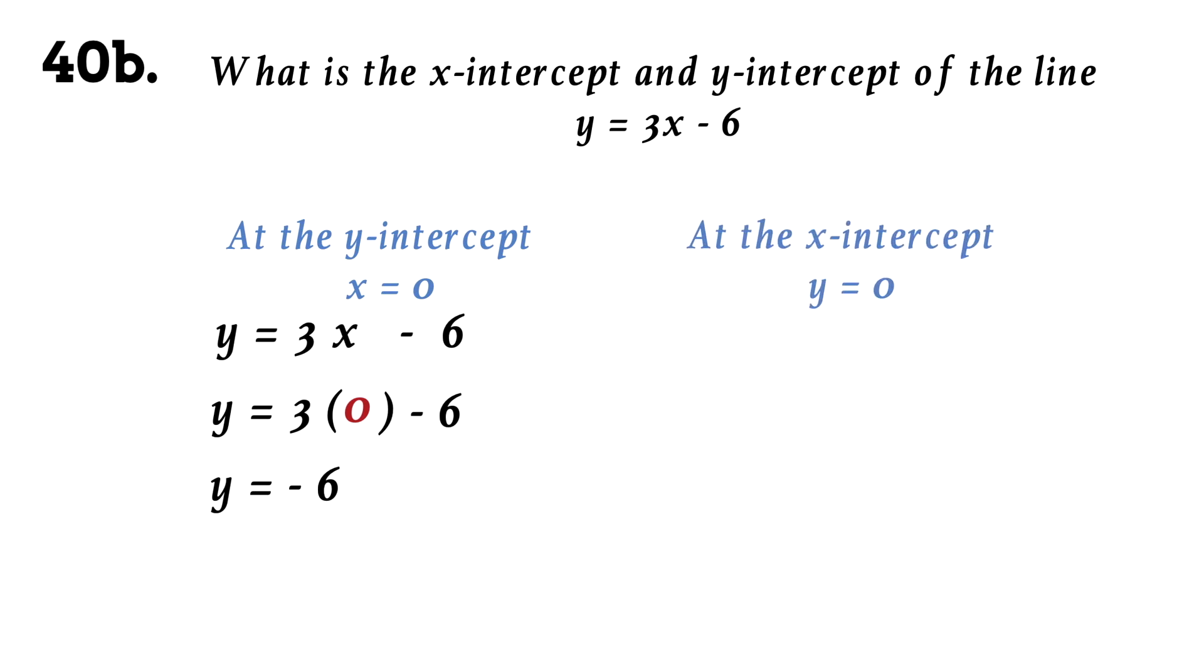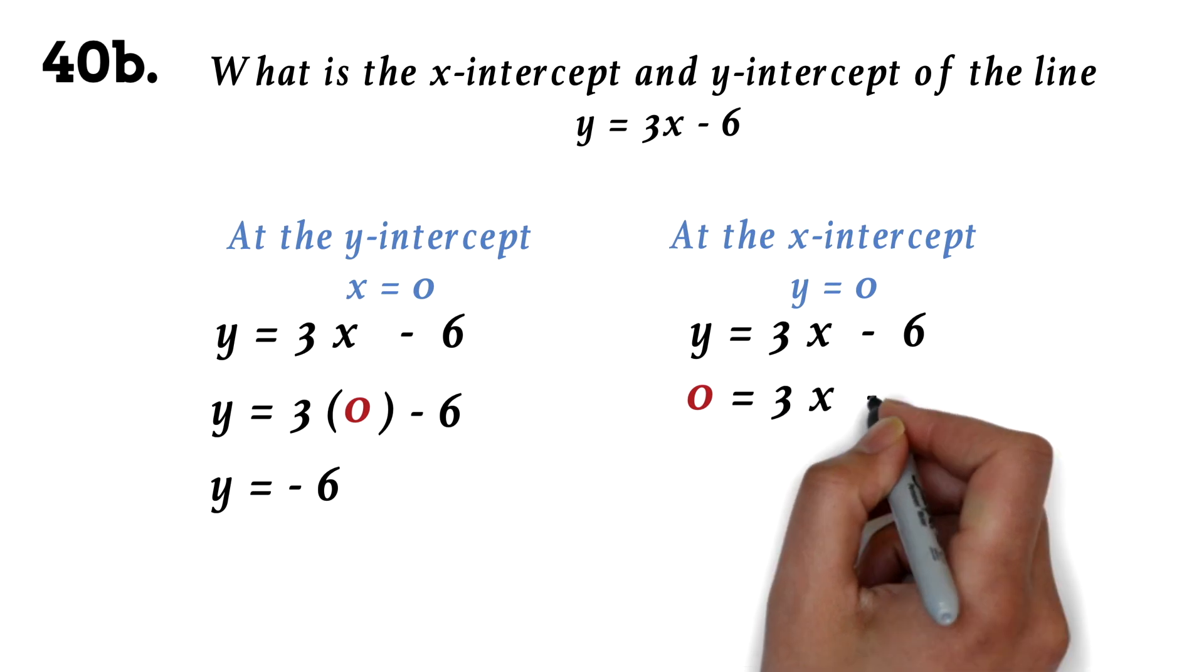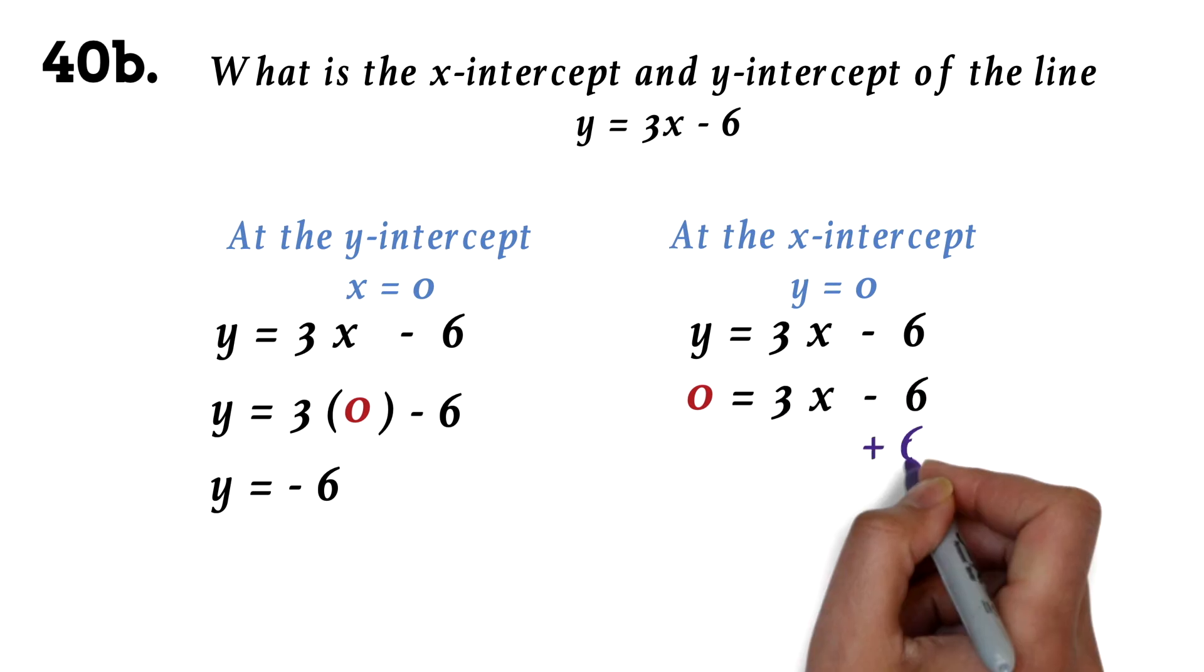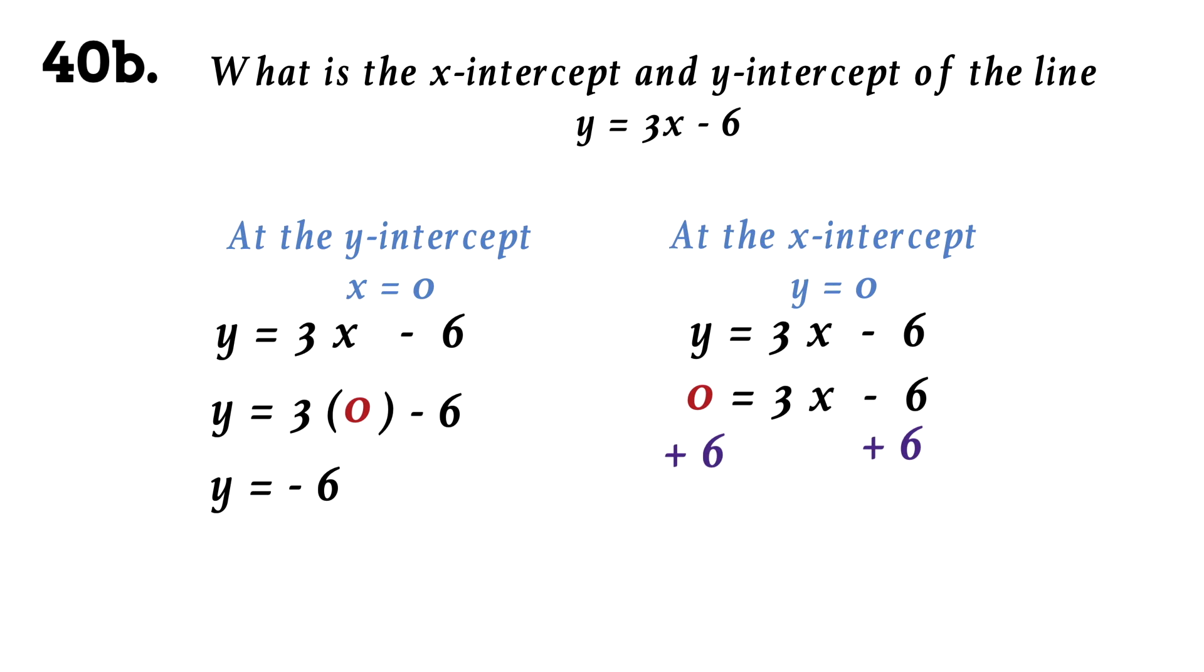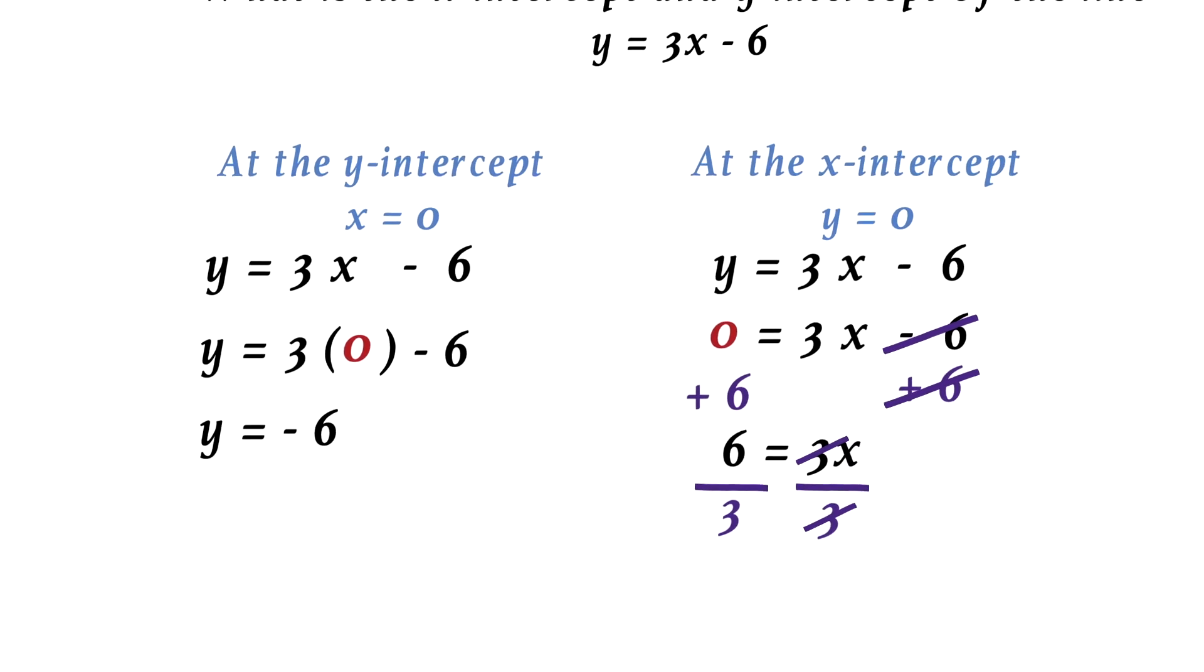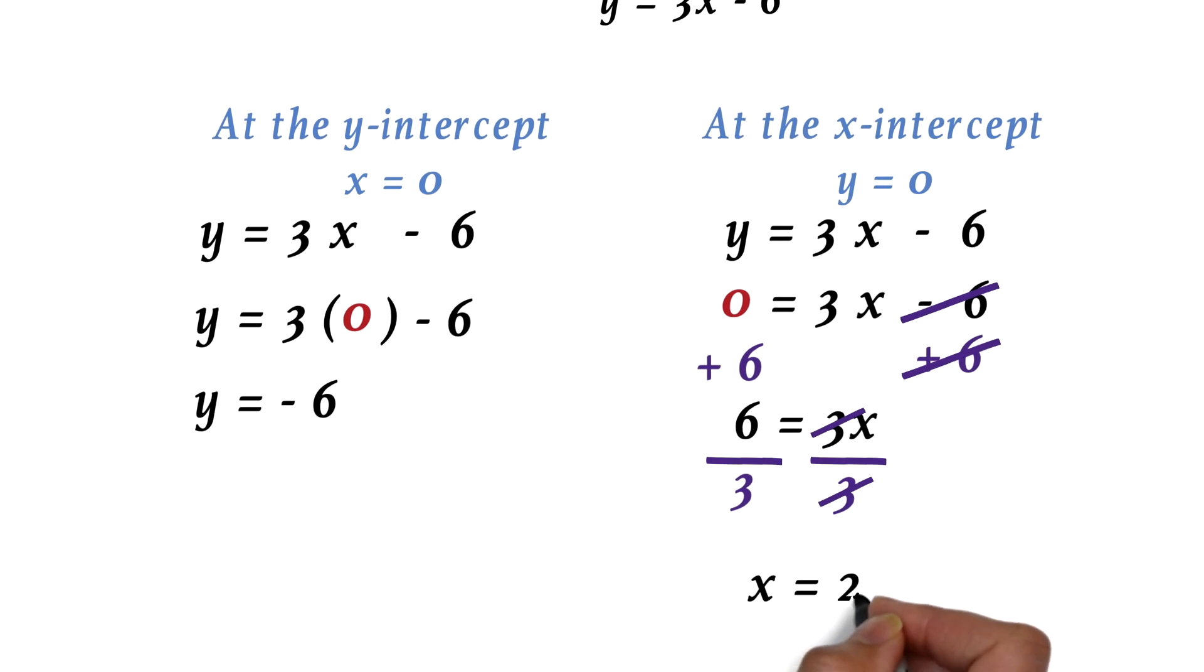Now, at the x-intercept, the value of y is 0. So we will put 0 in place of y and solve for x. We have 0 equals 3x minus 6. Add 6 to both sides. The 6 will cancel out. Now, 0 plus 6 is 6. We have 6 equals 3x. Next, we'll divide both sides by 3. The 3 will cancel out. 6 divided by 3 is 2. Therefore, the x-intercept is 2.